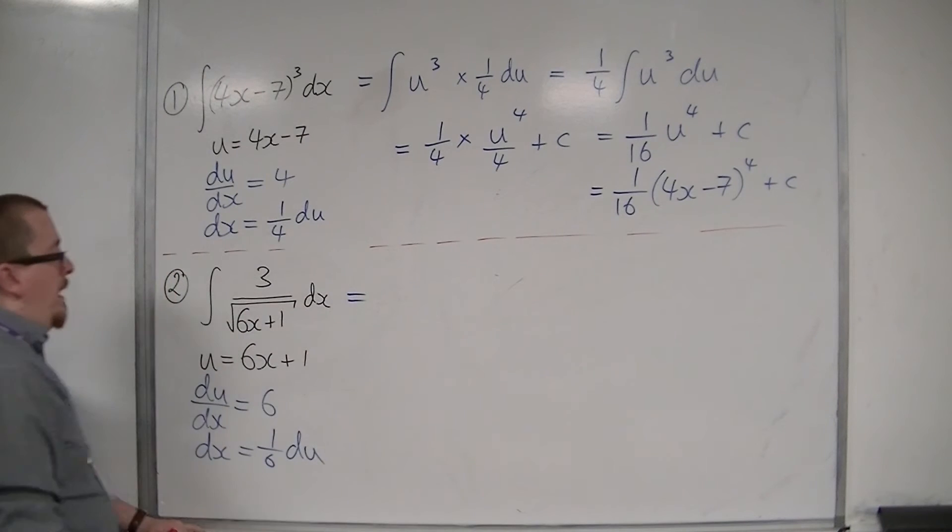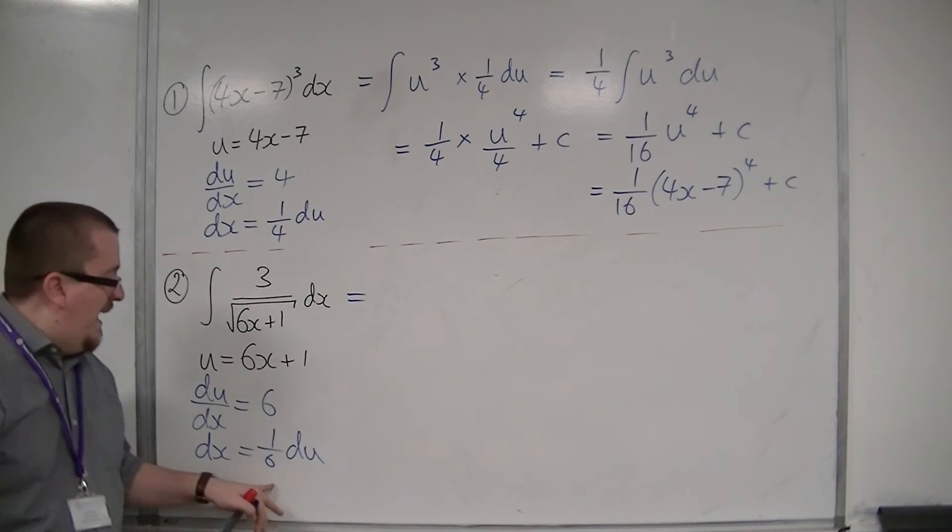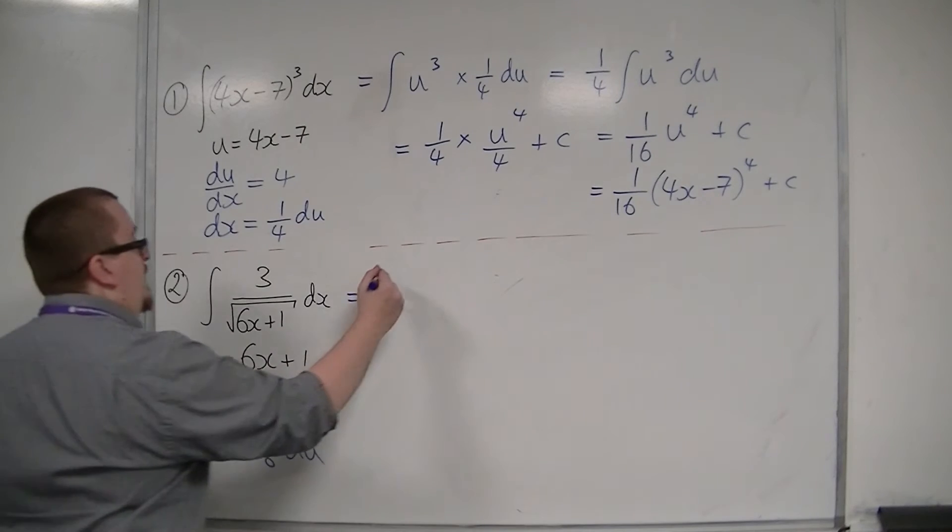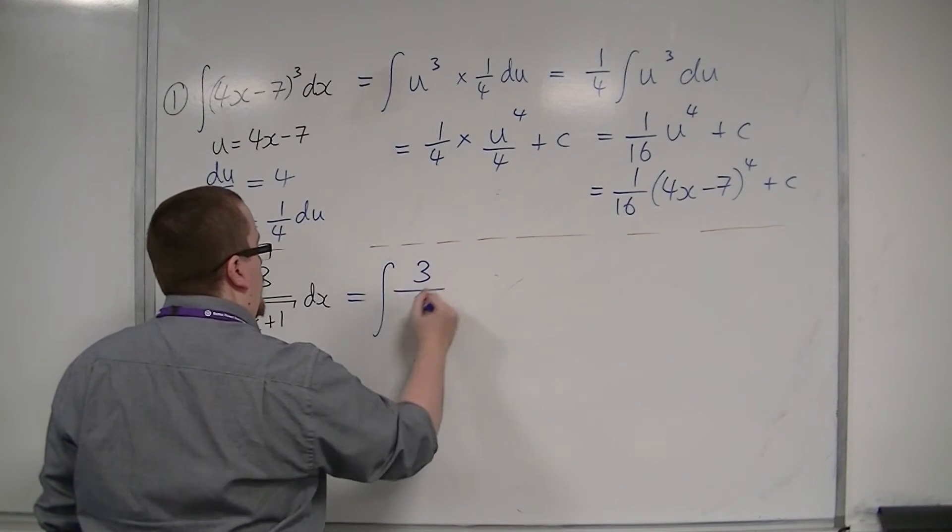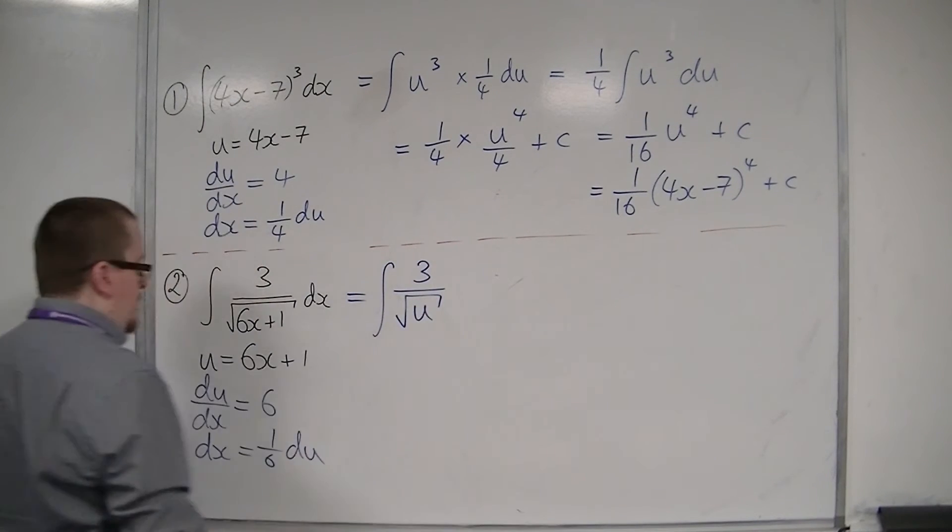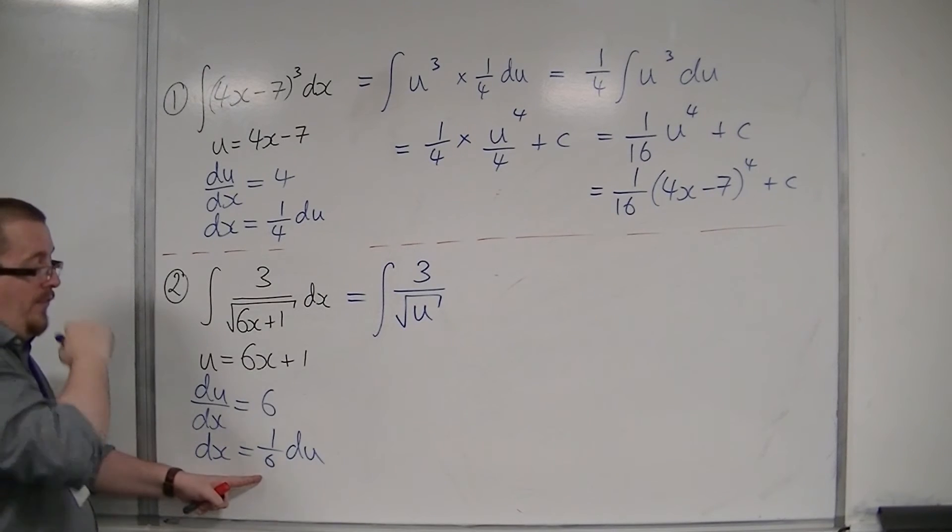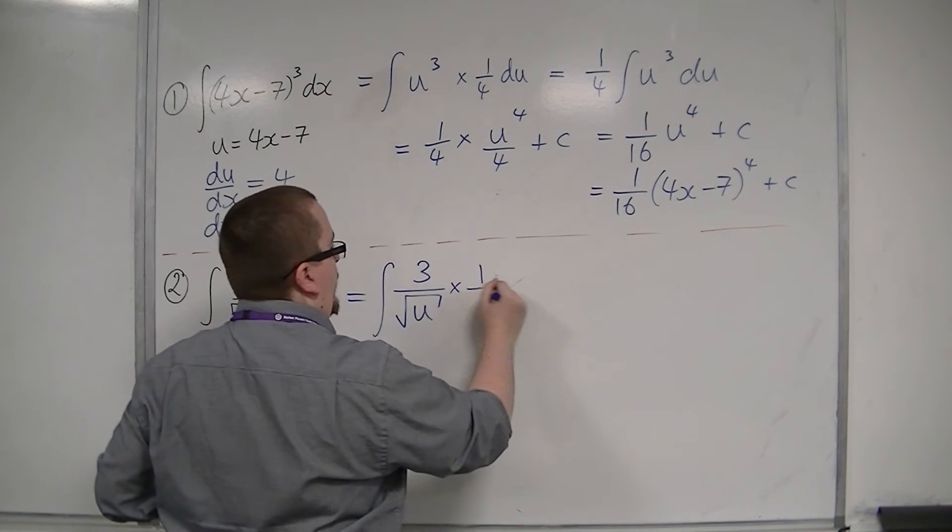So I now have a replacement for 6x plus 1, and a replacement for dx. So I'm going to have the integral of 3 over the square root of u, and dx is replaced at 1 6th du, so times 1 6th du.